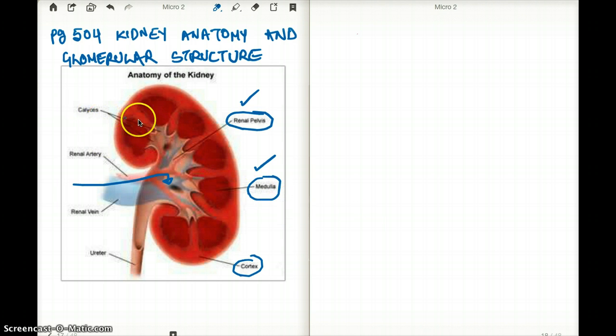The renal calyces are these branch-like structures. And obviously this is the ureter. You might have to know the medullary pyramids, which are kind of little projections coming out. Now let's talk about clinical correlations.